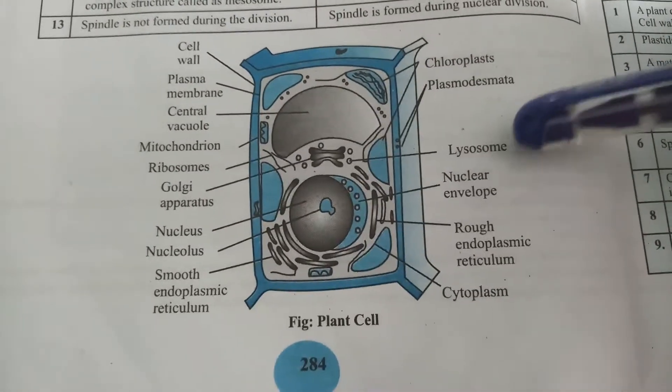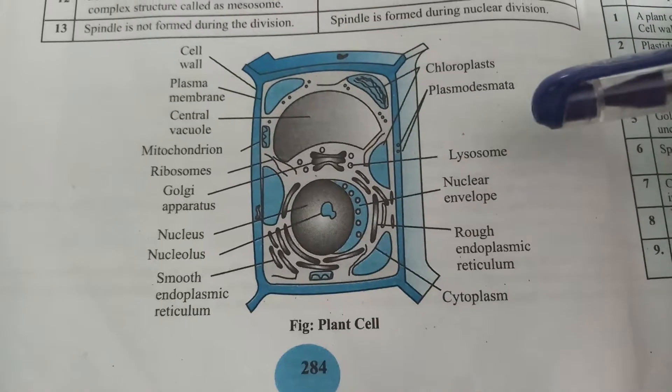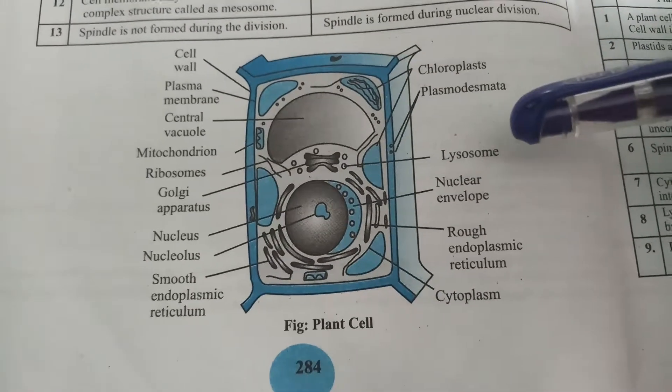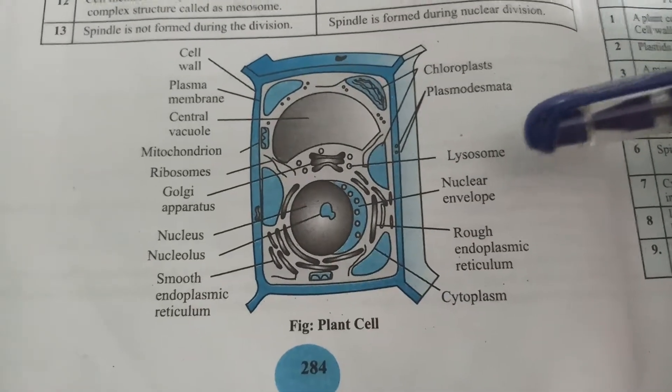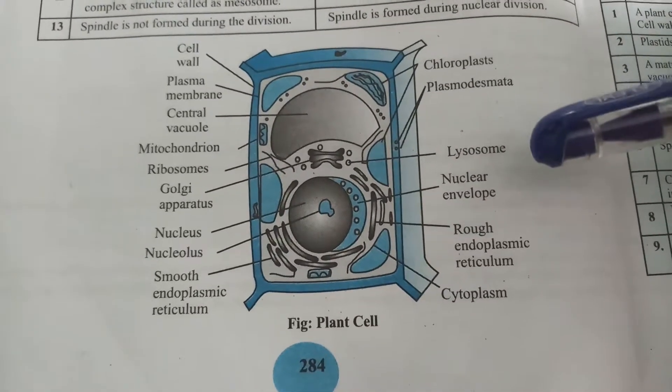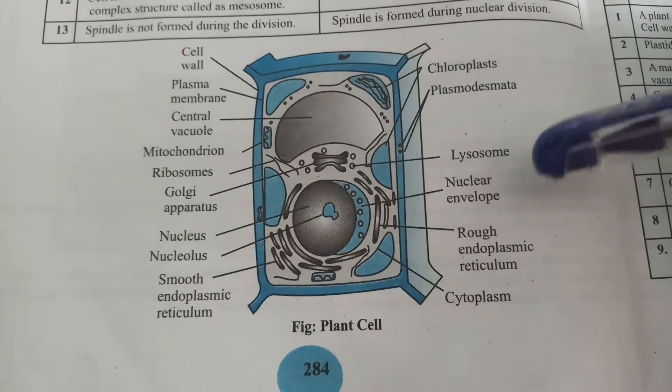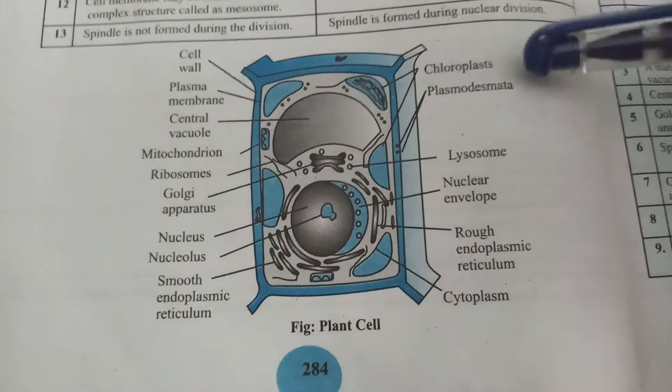Lysosomes contain hydrolytic enzymes — carboxidases, proteases, lipases, and nucleases — which help with the cleavage of carbohydrates, proteins, lipids, and nucleic acids.